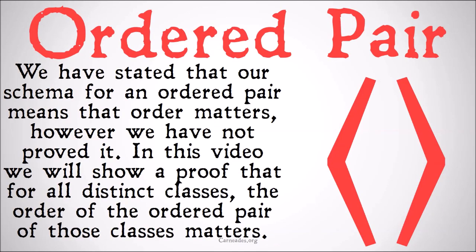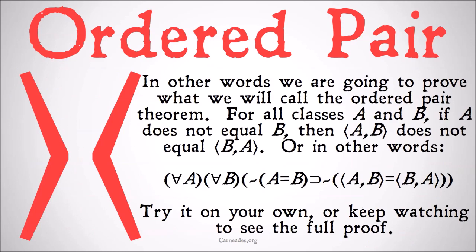We've stated that our schema for an ordered pair means that order matters. Order generally doesn't matter in sets, but for ordered pairs it does. However, we have not proved it. In this video we will show proof that for all classes, the order of the ordered pair of those classes matters. In other words, we're going to prove what we will call the ordered pair theorem: for all classes A and B, if A does not equal B, then AB does not equal BA. Or in other words, for all A and all B, if it's not the case that A equals B, then it's not the case that the ordered pair AB equals the ordered pair BA.